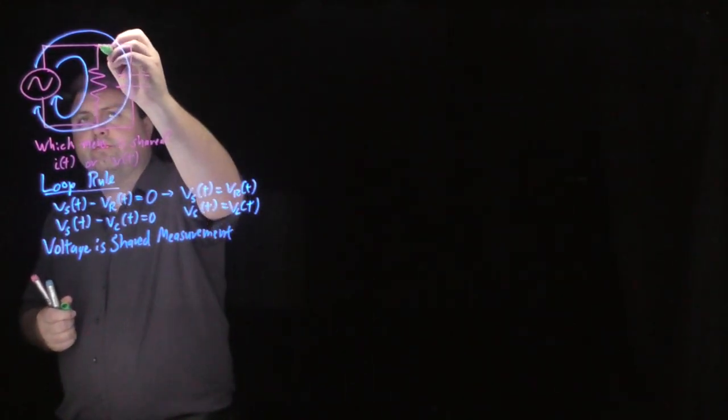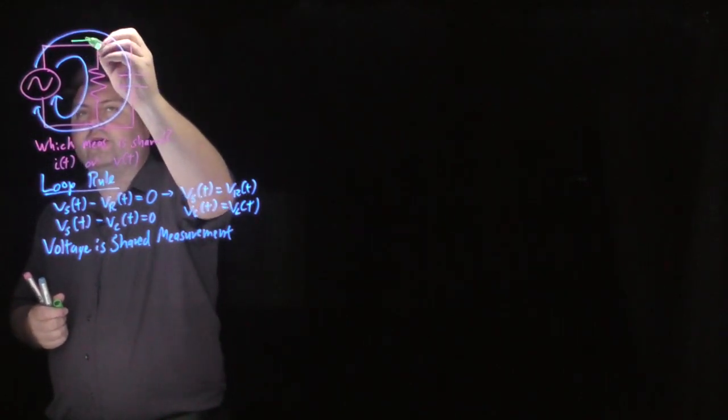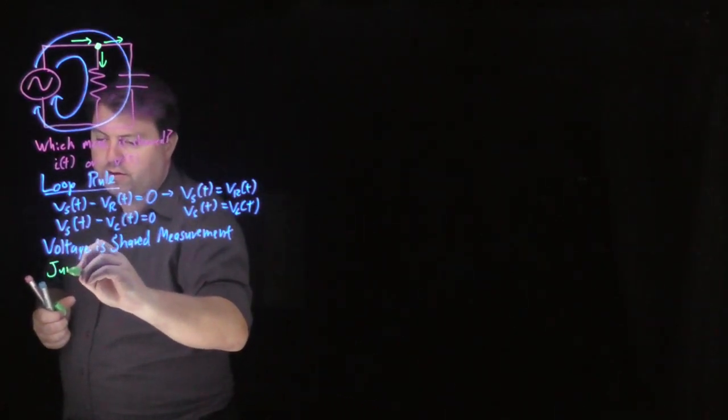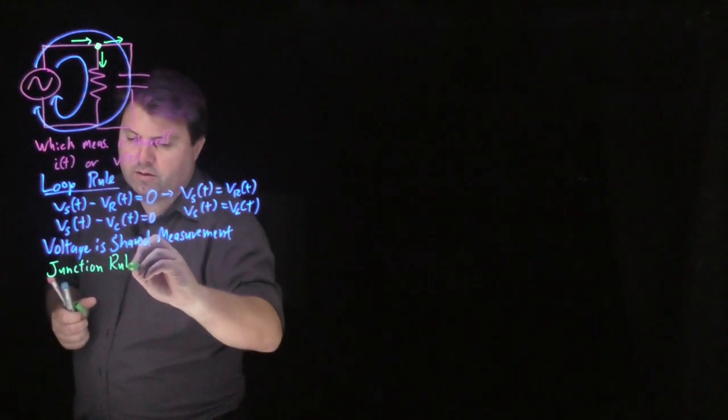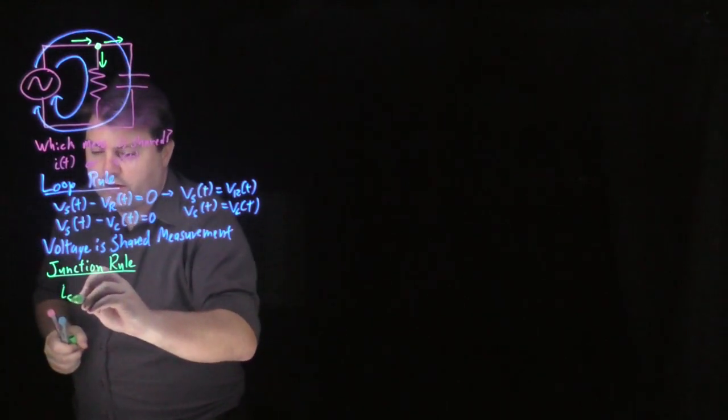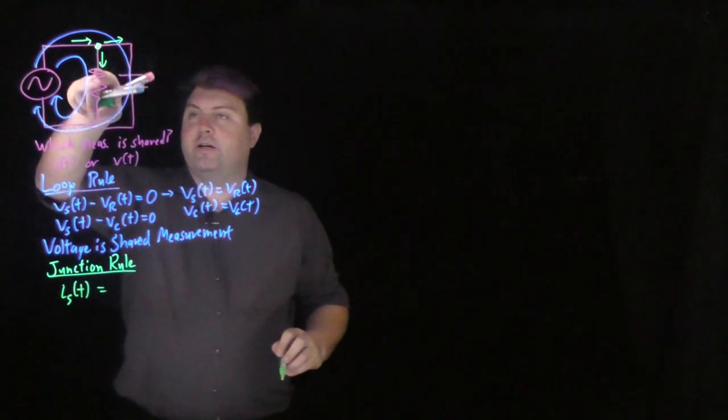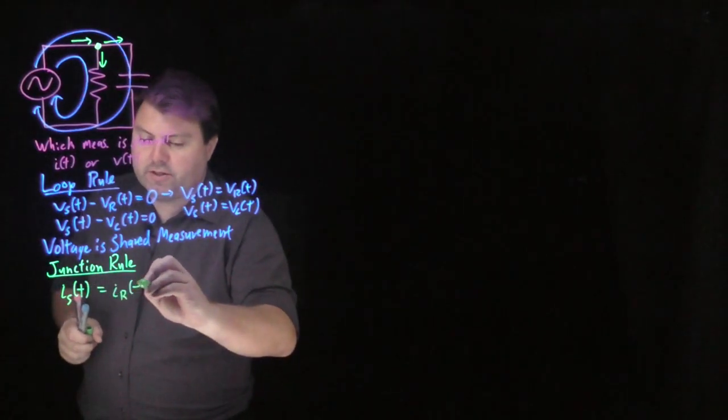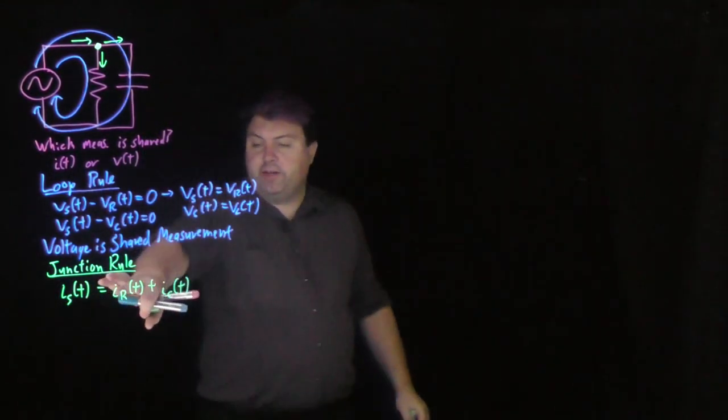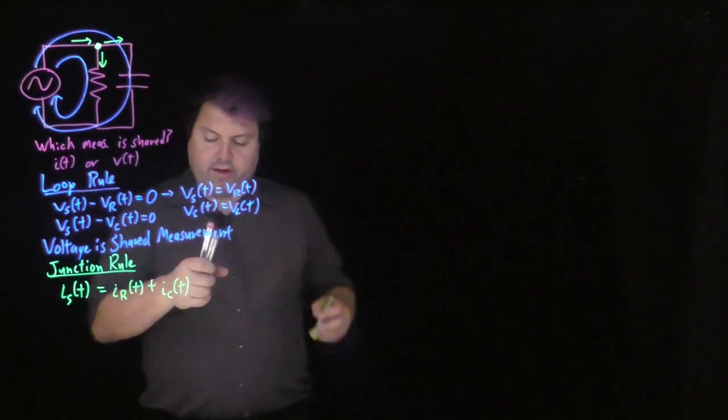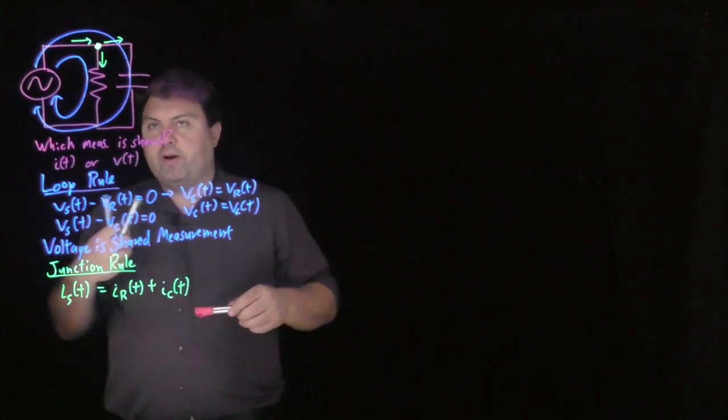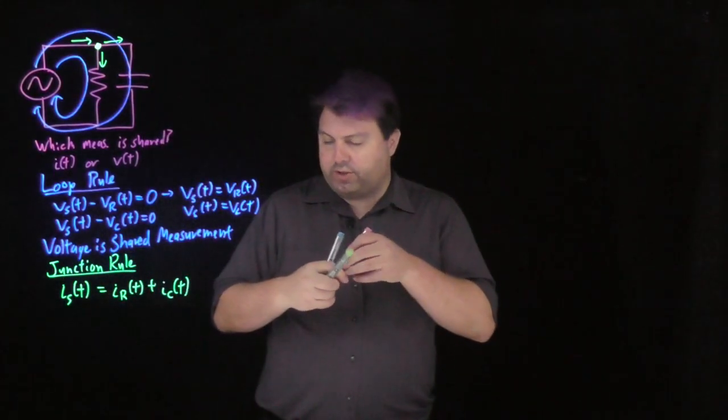Looking at this junction rule, we can look at the current coming in and then the current coming out. If we look at that from the junction rule, the current coming in is the current from the source, and the current coming out is the current over the resistor plus the current over the capacitor. So we'll find a use for this later, but right now we have a new thing. Previously, all of our AC circuits have been in series. It's what they usually are, but we want to have a little bit of interesting stuff with this. So voltage is our shared measurement.